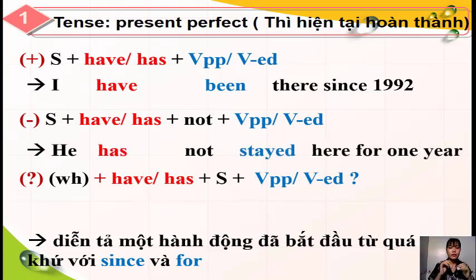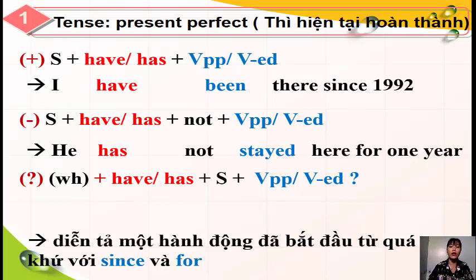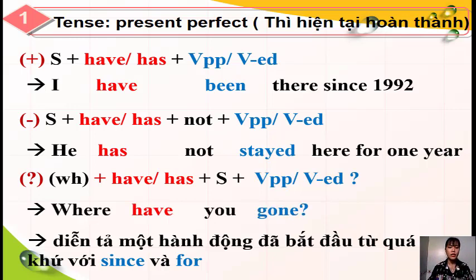Thể phủ định: chủ từ là 'he' số ít, cho nên cô sẽ sử dụng trợ động từ 'has' cộng cho 'not'. Động từ 'stay' ở hình thức thêm '-ed'. Nhìn '1 year' - trong 1 năm, đó là khoảng thời gian, cho nên cô sẽ sử dụng 'for'. Đối với thể nghi vấn, cô sẽ sử dụng 'Where have you gone?' - chủ từ 'you' số nhiều sử dụng 'have', và phân từ 2 của 'go' là 'gone'.